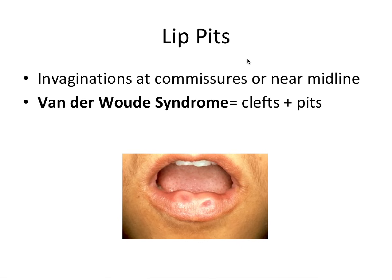Lip pits are invaginations at either the commissures — the corners of the mouth — or near the midline. The syndromes I'll be talking about in this series will be bolded and listed like a math equation, showing the sum of conditions that need to be met. Van der Woude syndrome involves both a cleft — either lip or palate or both — and the presence of lip pits, as seen in the picture.